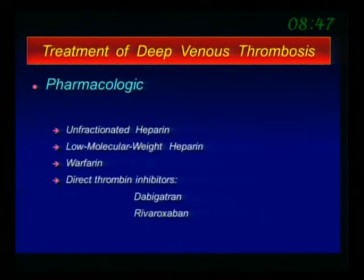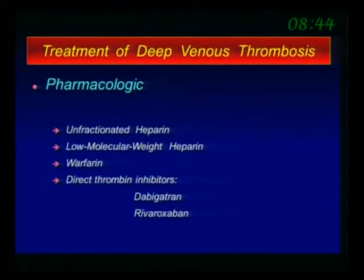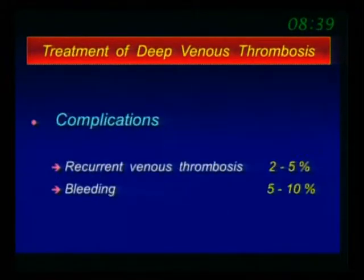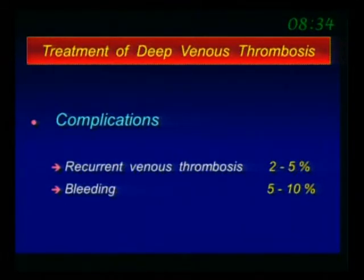The treatment basically is to give heparin or any direct thrombin inhibitors nowadays, and that would take care of the problem. But about 2% to 10% of these patients either have recurrent venous thrombosis despite proper anticoagulation, or they have bleeding that requires stopping anticoagulation — and then what are you going to do?